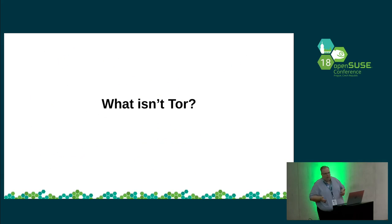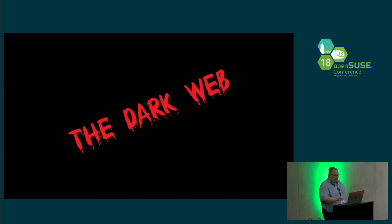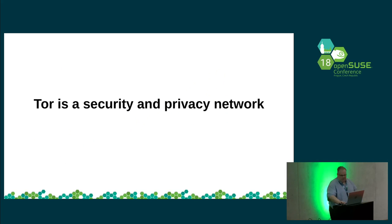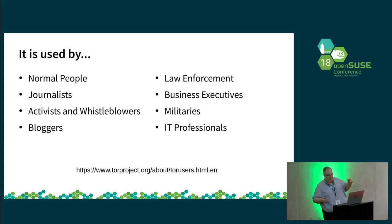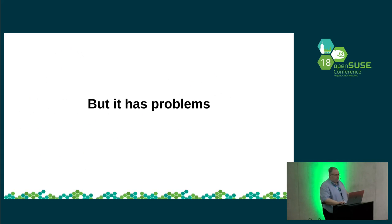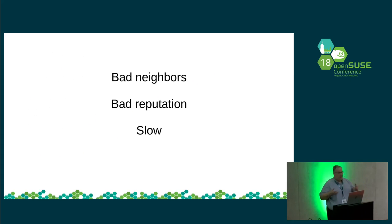What isn't Tor? If you read anything about InfoSec or the security community, you're going to hear that Tor is a bad place. Tor isn't the dark web. Tor is a security and privacy network. It is used by normal people, journalists, activists, bloggers, law enforcement, business executives, militaries, and IT professionals. I left a link so you can see more about how different groups use Tor. But it has problems — it's got bad neighbors. There are lots of bad websites on the Tor network: drug markets, crime markets, really bad things. Because of this, it's got a bad reputation.